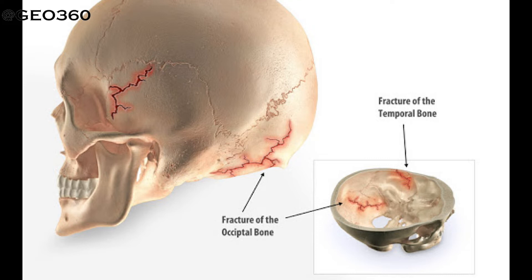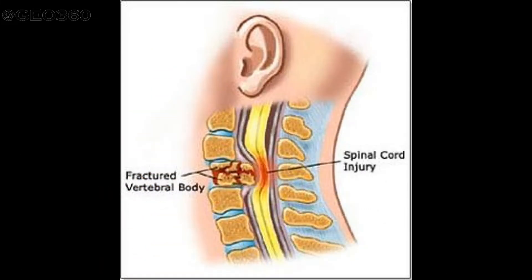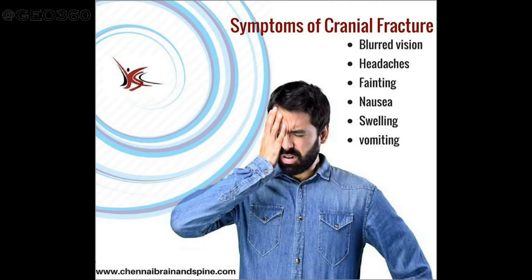You should suspect a potential head, neck, or spine injury when the person has fallen from a height greater than their own standing height, is involved in a road traffic accident and suffered a hard blow, feels nausea and vomiting, does not remember exactly what happened, is behaving in an irritated or unusual way after the accident, complains of blurred vision, or feels pain or tenderness in the head, neck, or back.